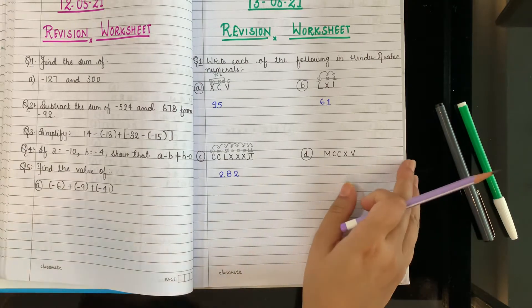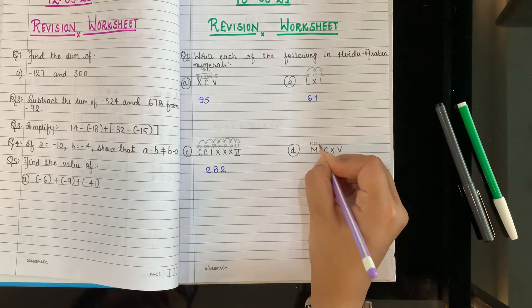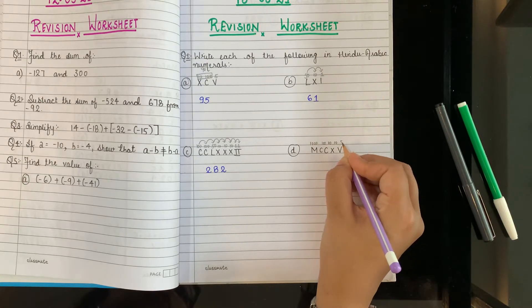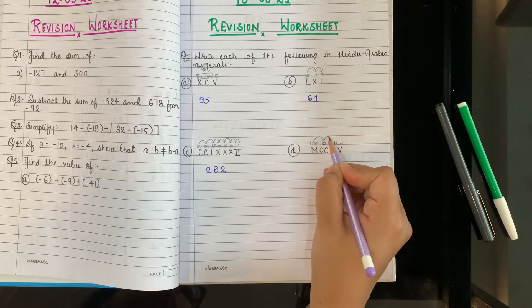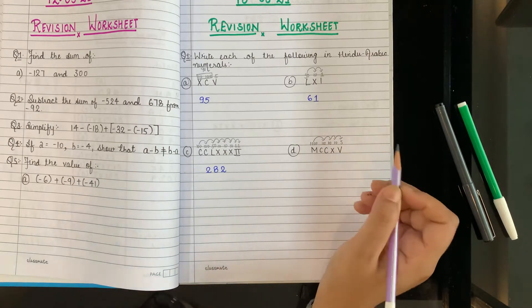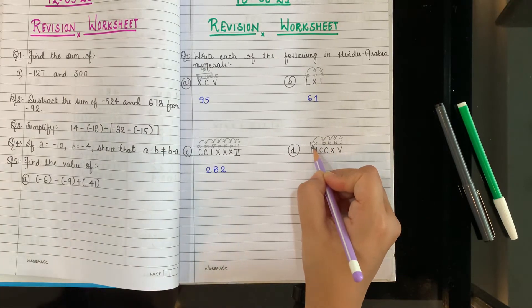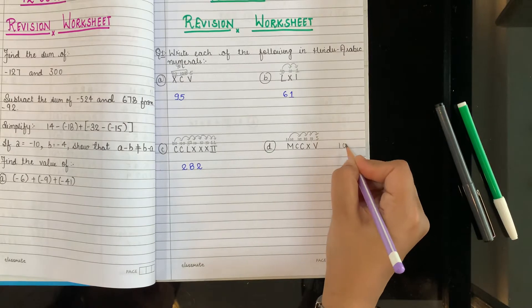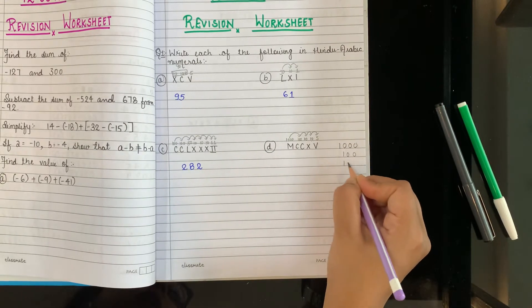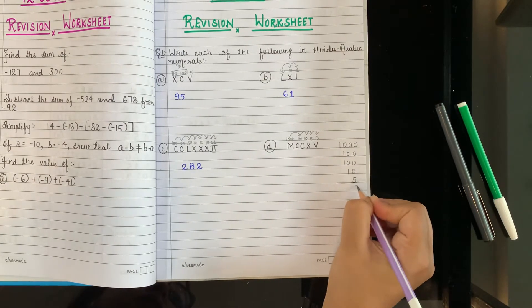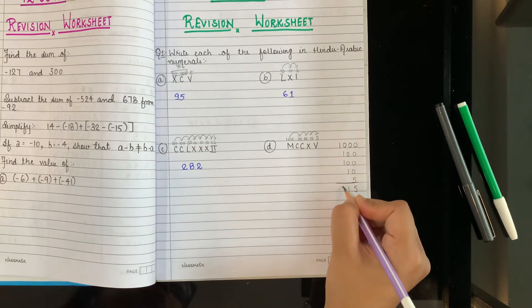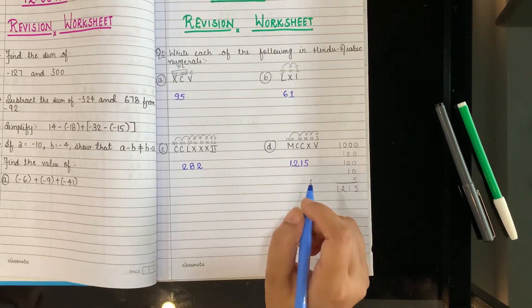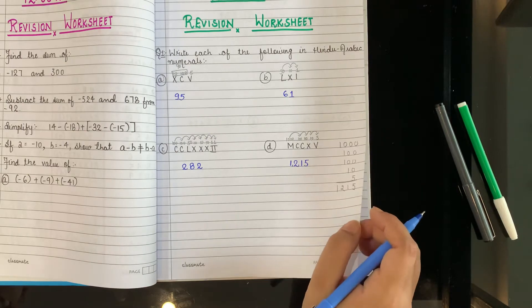This is C is 100, C is again 100, 50, X is 10, X is 10, X is 10, I is 1, I is 1. 100, equal to 100, smaller than 100 is 50, smaller than 50 is 10, smaller than 10 is 10, smaller than 10 is 10, smaller than 10 is 1 and equal to 1 is 1. So nowhere has a smaller come after a larger, meaning there's no reversal, no need to make a block. So we can directly add it. 100, 200, 250, 260, 270, 280, 281, 282. Answer is 282.